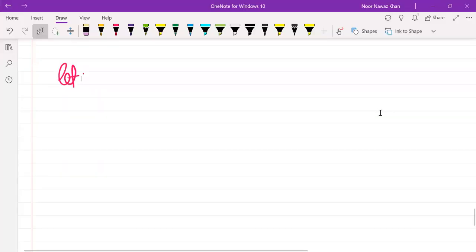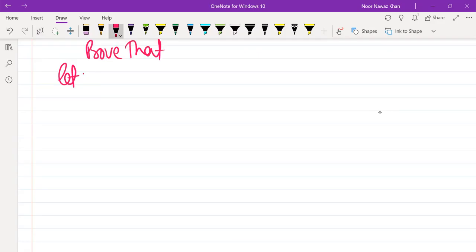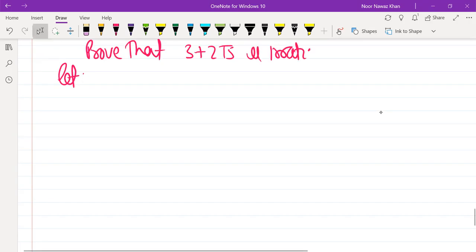We have a question that we have to prove that 3 plus 2 root 5 is irrational. So, what do we do?